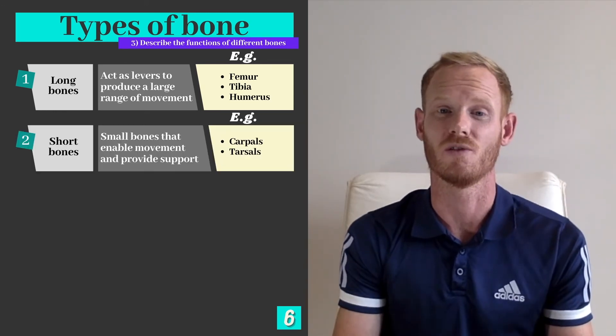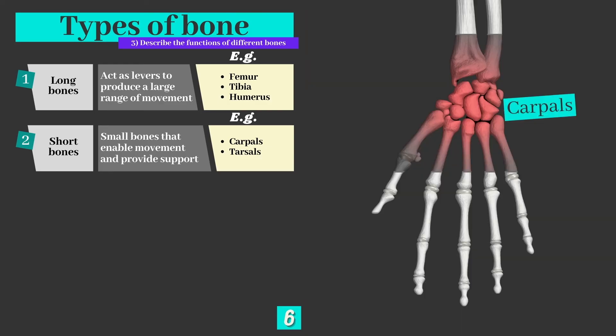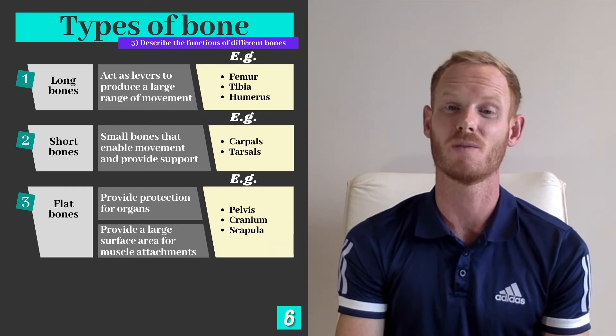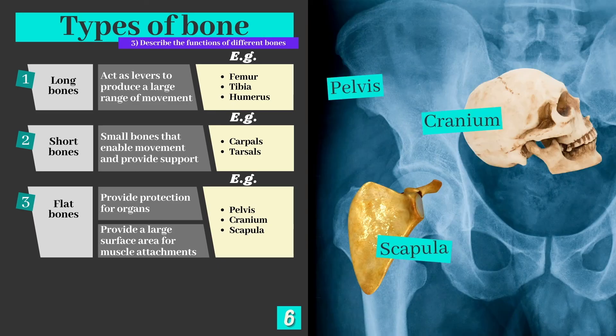Short bones are small bones that enable movement and provide support. They can't produce a big range of movement like long bones, however, and examples include the carpals and the tarsals in the hands and feet. Flat bones such as the cranium and ribs provide protection for vital organs, while others such as the scapula provide a large surface area for muscle attachments.